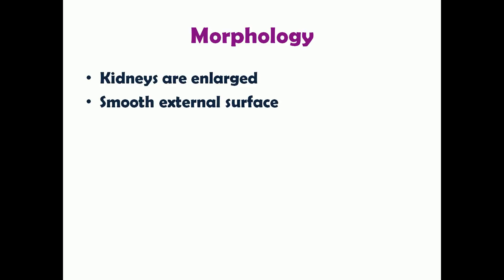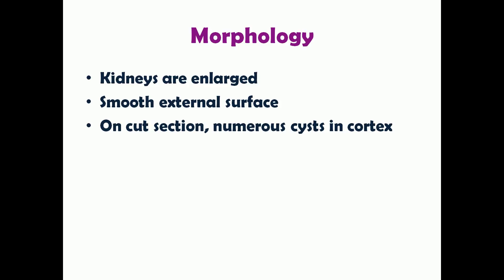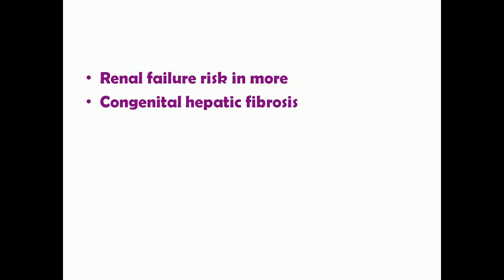The morphology of kidneys in autosomal recessive PKD differs from the dominant type. The kidneys are enlarged, but the external surface appears smooth — the cysts are not prominent on the surface. However, on cut section, numerous small cysts are visible in the cortex. Patients with childhood PKD are at increased risk of developing renal failure at a very early age and are at high risk of early death.